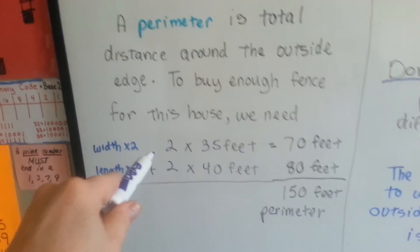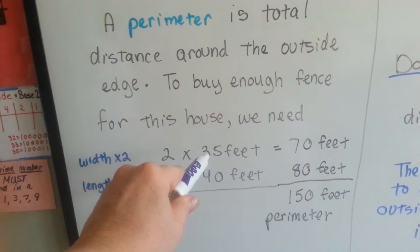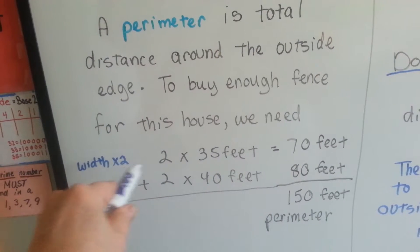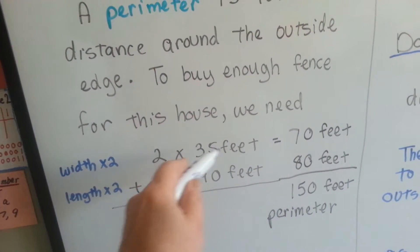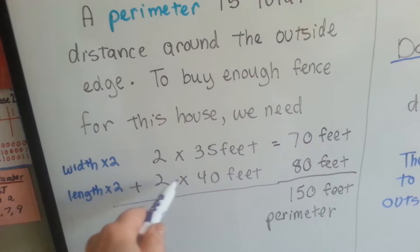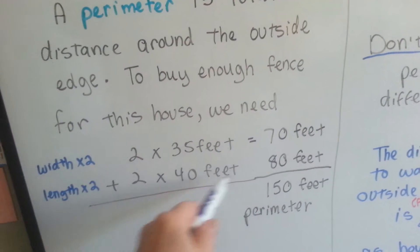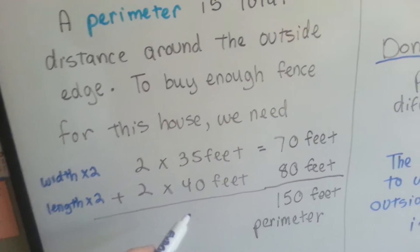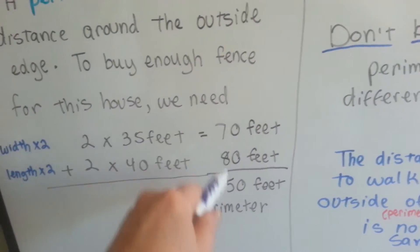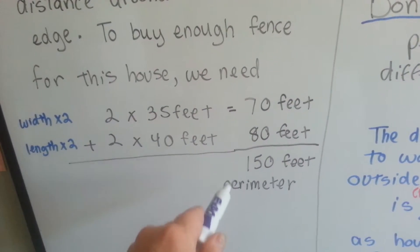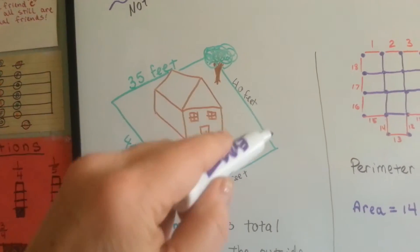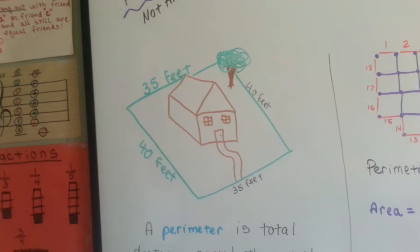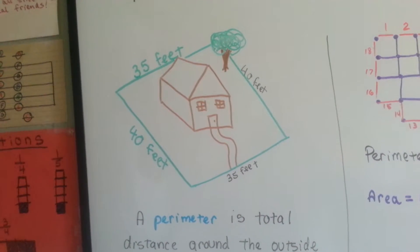So 2 times the 35 feet for both width sides would be 70 because 35 times 2 is 70. And 2 times 40 is 80. See? 2 times 4 is 8 and you add 0. When we add the 70 and 80 together, we get 150 feet for the perimeter. That is how much fencing would go around the outside edge of this yard.